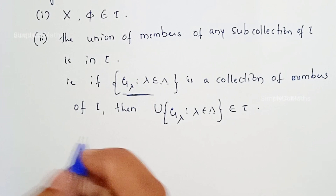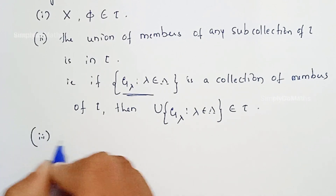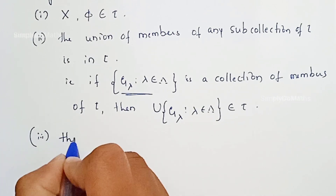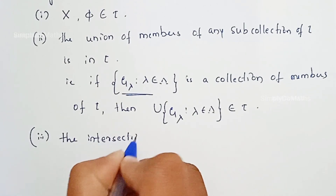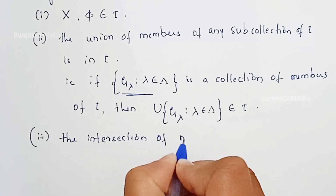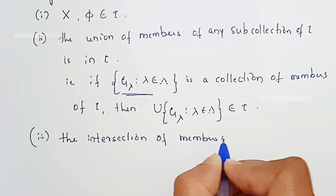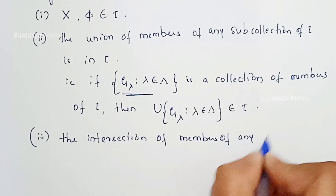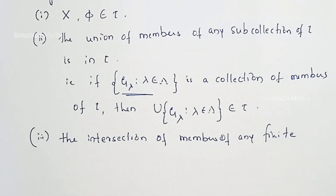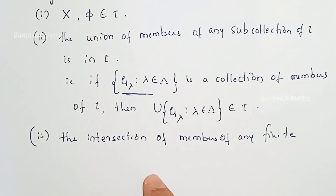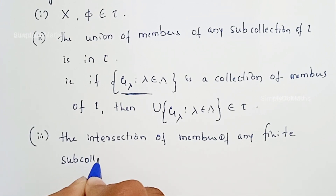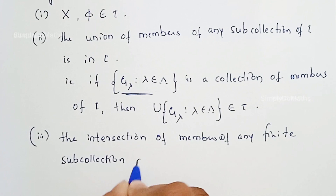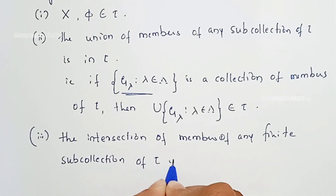This is the second condition. The third condition is the intersection property: the intersection of members of tau should be an element of tau. Specifically, the intersection of members of any finite sub-collection of tau must be in tau.